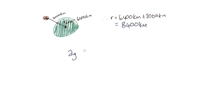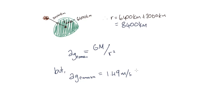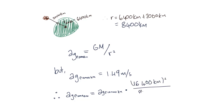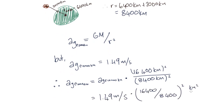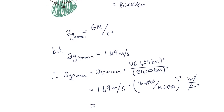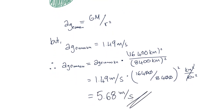The acceleration due to gravity of the asteroid at 2,000 kilometers equals big G times big M divided by r squared. Since we already know the acceleration at 10,000 kilometers is 1.49 meters per second squared, it's easy to calculate the acceleration at 2,000 kilometers. This equals 1.49 multiplied by 16,400 kilometers squared over 8,400 kilometers squared. Canceling kilometers squared, we find the acceleration due to gravity at 2,000 kilometers above the Earth's surface equals 5.68 meters per second squared.